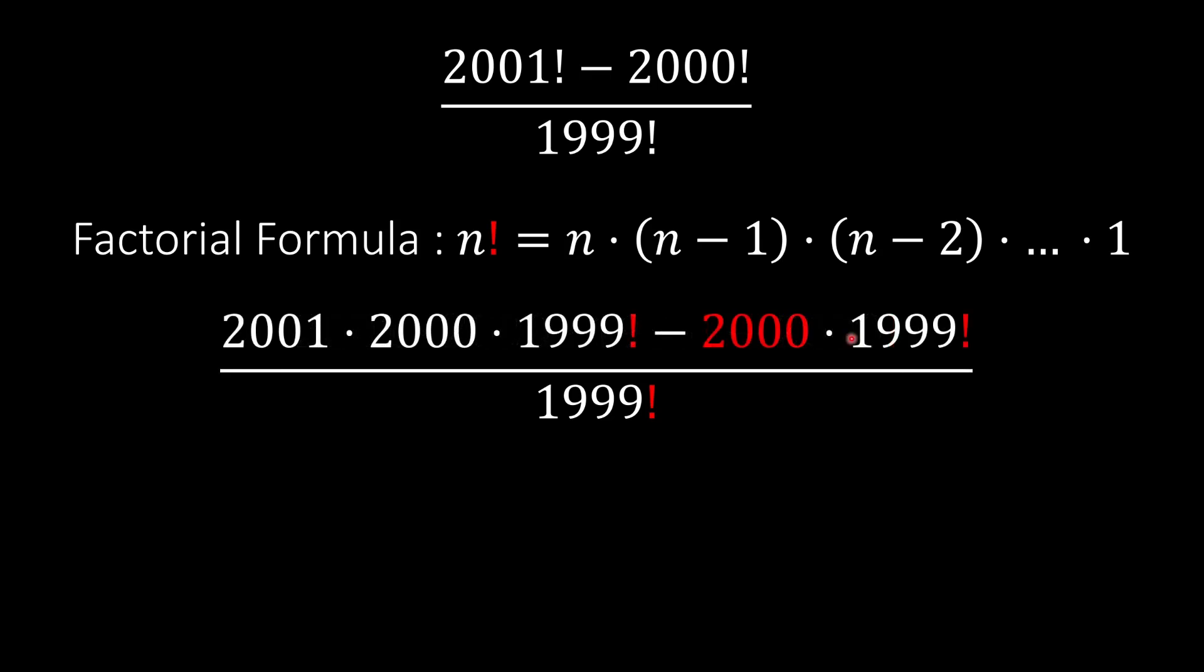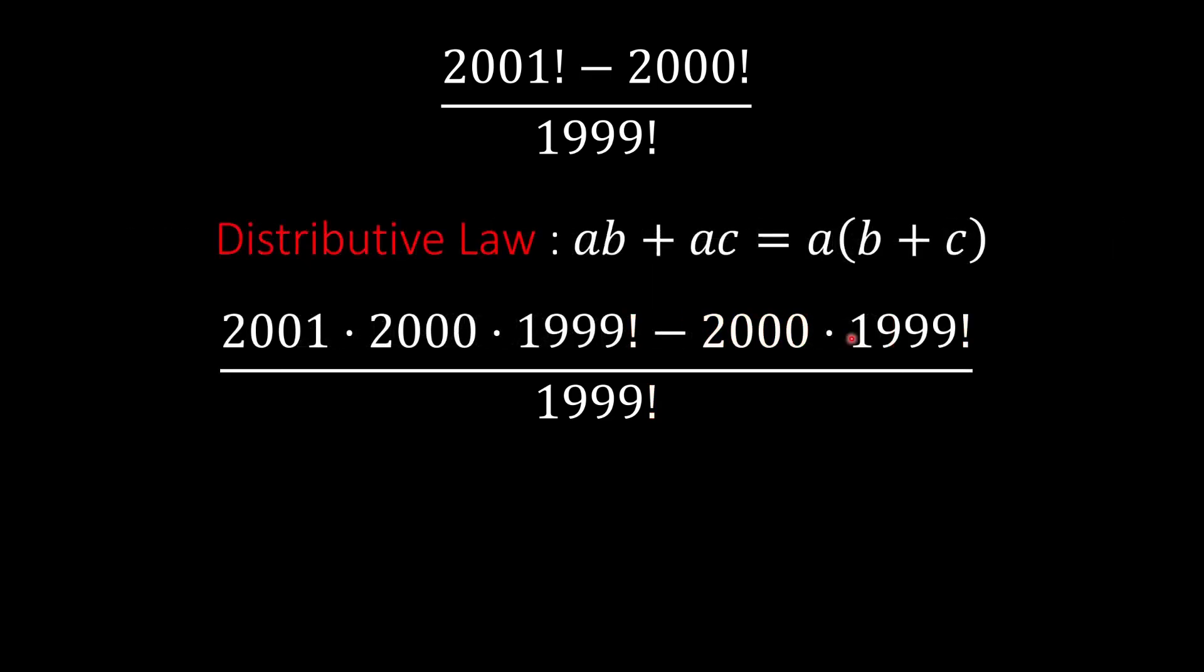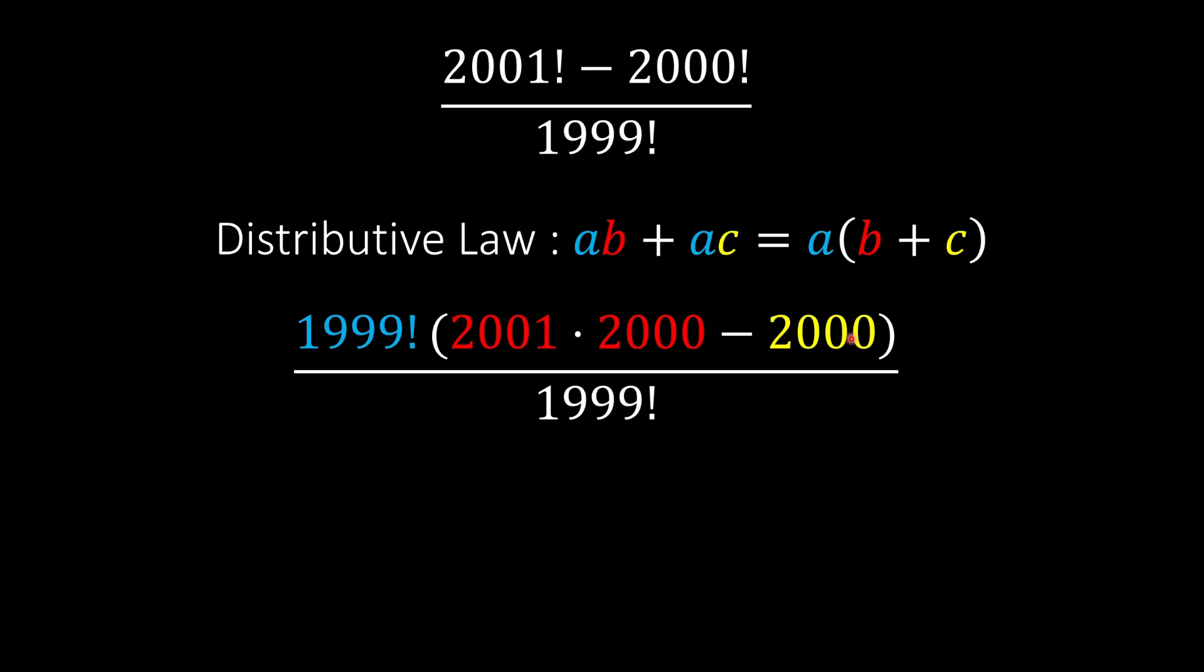Now we can use the distributive law, which states that we remove that 1999 factorial and put it outside. This is the law. We remove the color coordination. The next step is to cancel out that 1999 factorial.